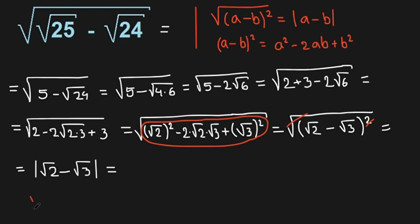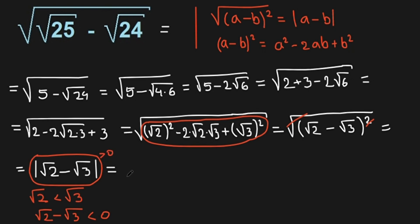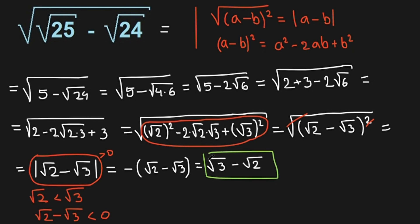But we know that the square root of 2 is smaller than the square root of 3, so square root of 2 minus square root of 3 is less than 0. But the absolute value of (square root of 2 minus square root of 3) must be larger than 0. So we put a minus sign in front of the brackets: minus (square root of 2 minus square root of 3), which equals square root of 3 minus square root of 2. And this is our answer.